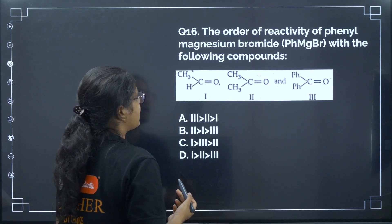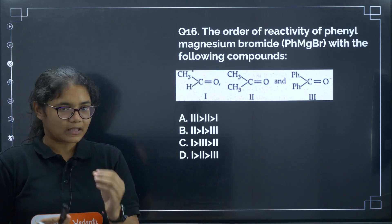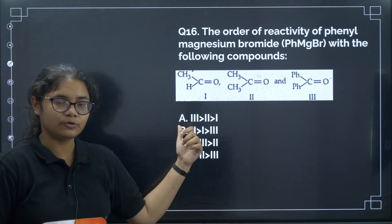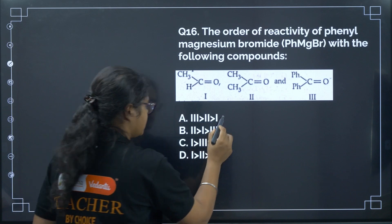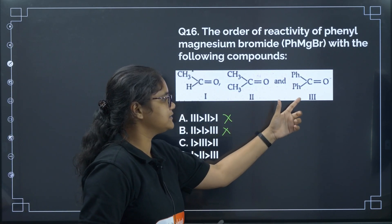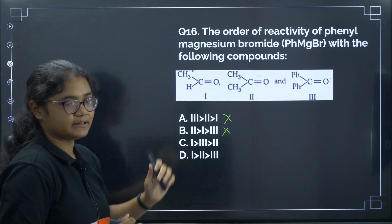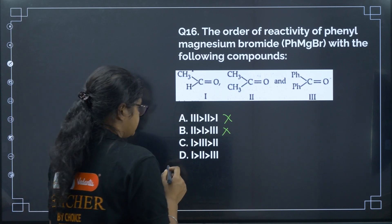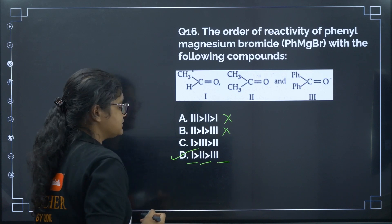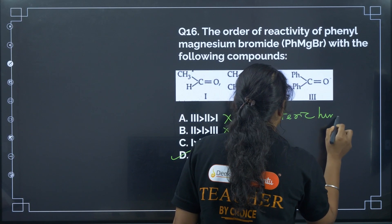Next: the order of reactivity of phenylmagnesium bromide with carbonyl compounds depends on steric hindrance. Aldehydes are always more reactive than ketones, so the aldehyde comes first — we can eliminate two options. Comparing the remaining two ketones, the phenyl ketone has less steric hindrance than dimethyl ketone (acetone). So the correct reactivity order is: aldehyde first, then phenyl ketone, then dimethyl ketone. Correct answer: option D.